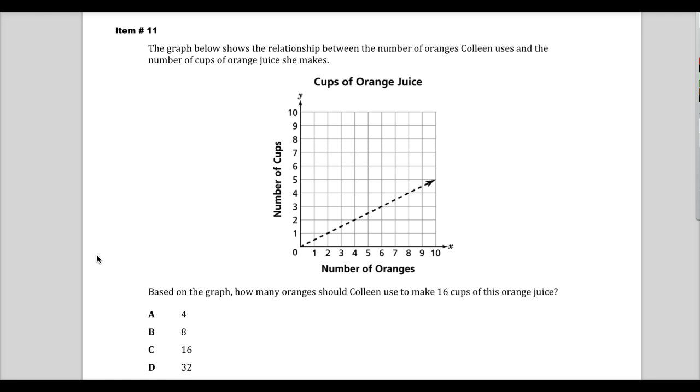Now, in many cases, I would actually suggest that people extend the line out to find answers. The question asks, based on the graph, how many oranges should Colleen use to make 16 cups of this orange juice? The problem is, the line is increasing so slowly, you'll run out of paper.